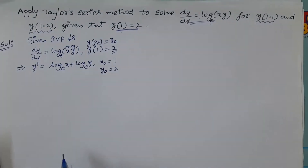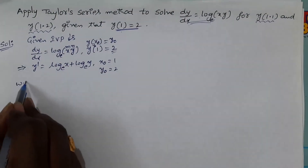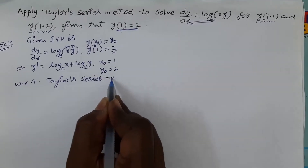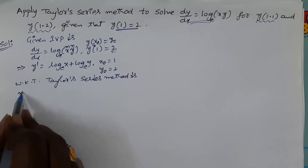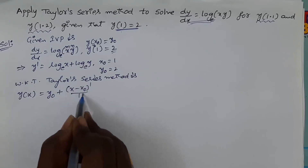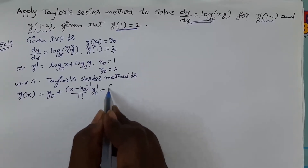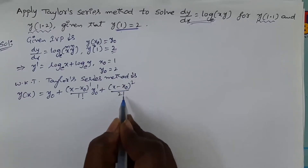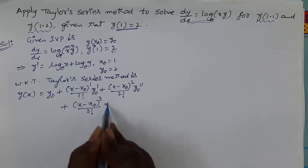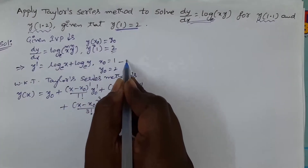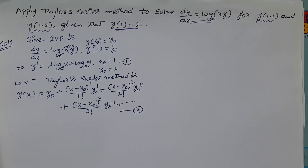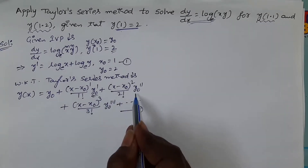The Taylor series method gives y(x) = y₀ + (x − x₀)/1! · y₀' + (x − x₀)²/2! · y₀'' + (x − x₀)³/3! · y₀''' + ... It is sufficient to find the unknown derivatives involved in this formula: y₀', y₀'', y₀''', etc.